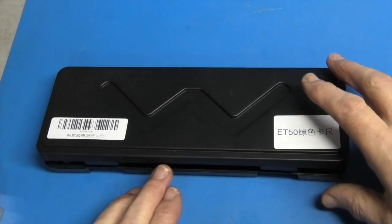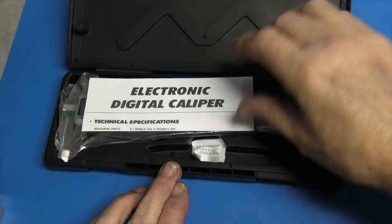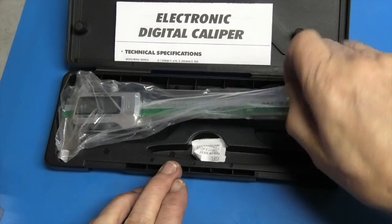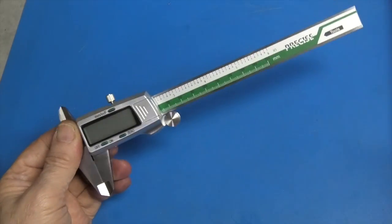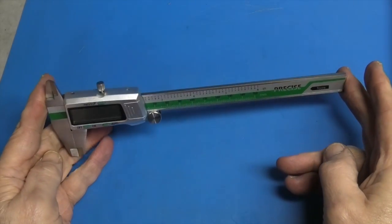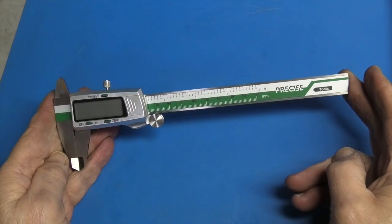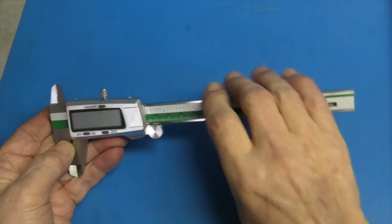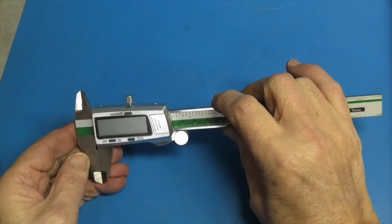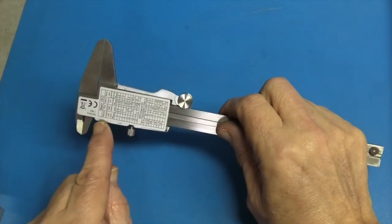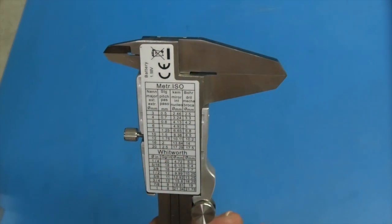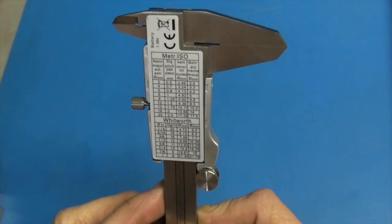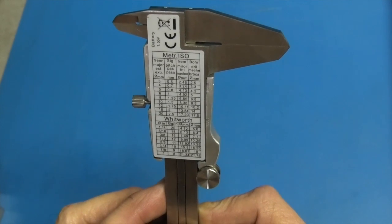The next item I have is a digital caliper. Comes in a plastic box. Comes with a battery, in this case it was already fitted. On the back you have a conversion chart, different information. For Whitworth and metric details.